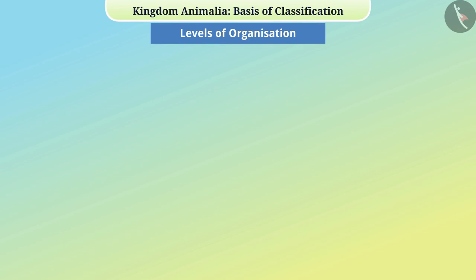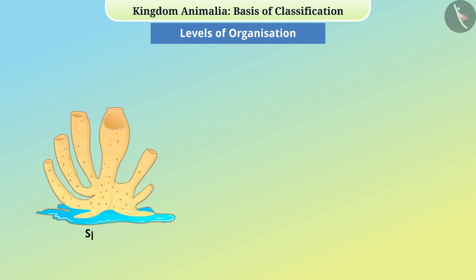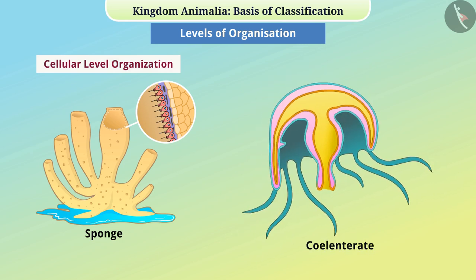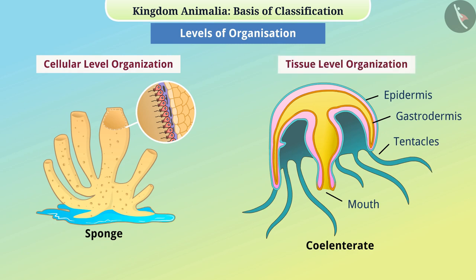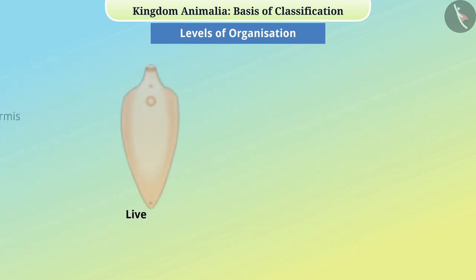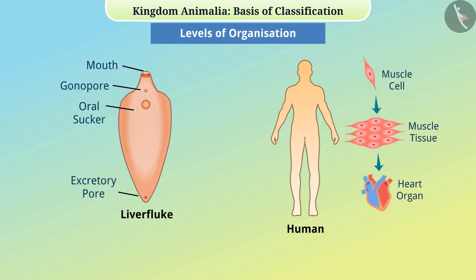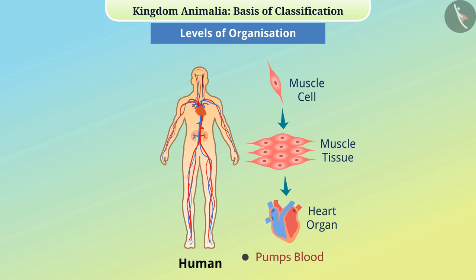Levels of Organization: Cells in some animals like sponges are in scattered clusters — this is called cellular level organization. In some animals such as Coelentrata, cells perform their function by forming tissue, called tissue level organization. In some animals such as liver fluke and other higher associations, tissue organizes and makes organs where each organ performs a specific function. In some animals, different organs together make an organ system and perform special functions in the body.